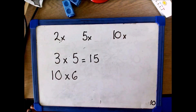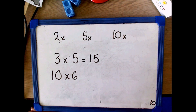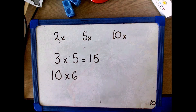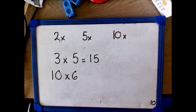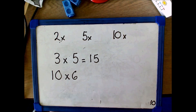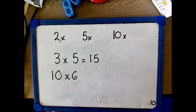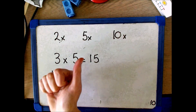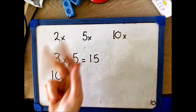Children don't always have to use objects or pictures to help them find the answer. As children get more fluent they can use their knowledge of counting in 2s, 5s and 10s. In the multiplication 3 times 5, children can simply use their knowledge of counting in 5s: 5, 10, 15.